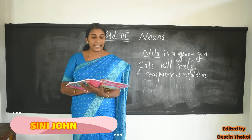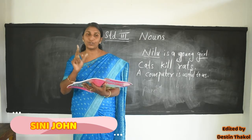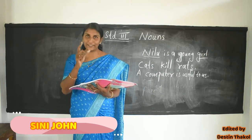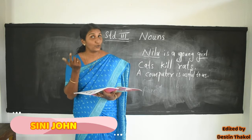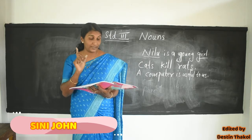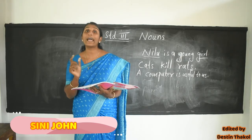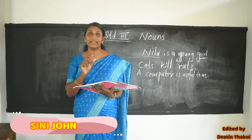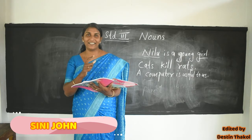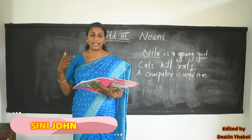Exercise number C: here are groups of nouns; add one more to each group. Some groups are given there. The first one is a group of birds — can you write another bird's name? Next one is fruits — a group of fruits, you have to write one more fruit. Then brother, sister, uncle — relations — so you can write one more relation there. In this way you can do that.